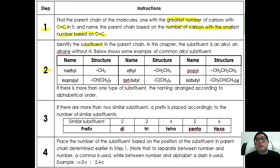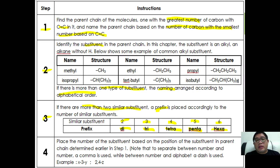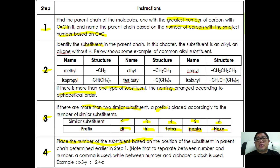For alkyl groups you have methyl, ethyl, propyl, isopropyl, tert-butyl, and isobutyl. If there are more than one type of substituent, the naming is arranged in alphabetical order. In step three, if there are more than two similar substituents, a prefix is placed according to the number: two — di, three — tri, four — tetra, five — penta, six — hexa. In step four, place the number of each substituent carbon based on the position determined in step one. Use a comma to separate number from number, and a dash to separate a number from a letter.